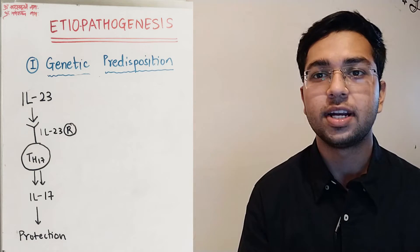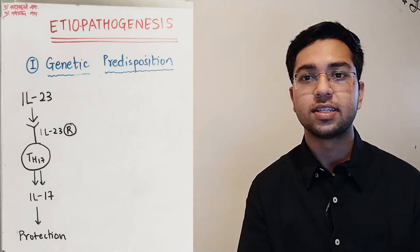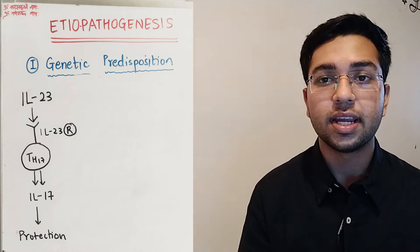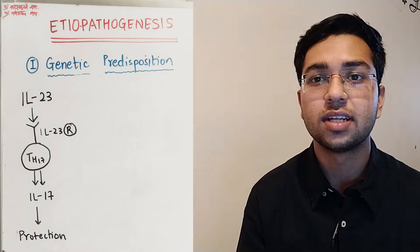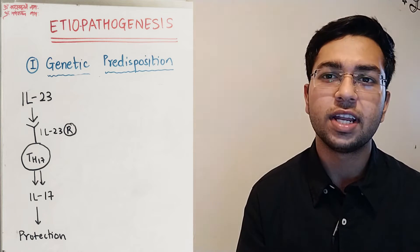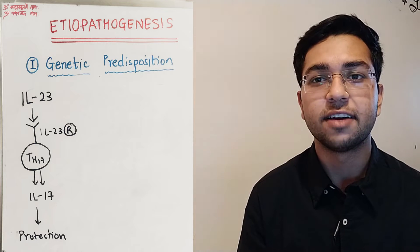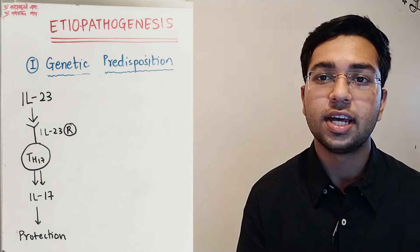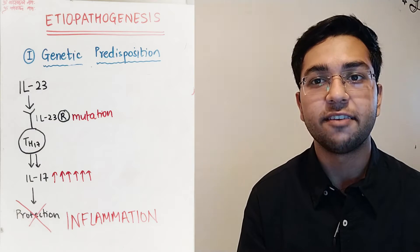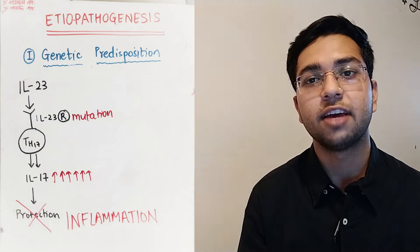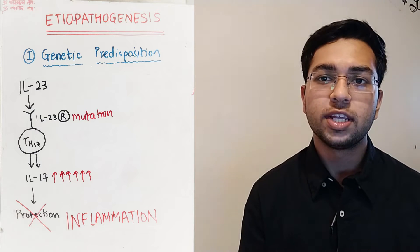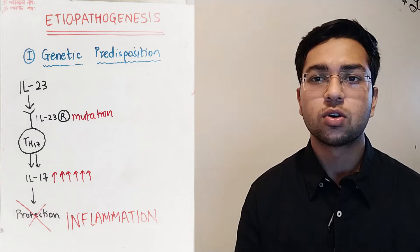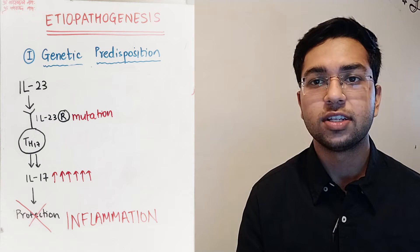The interleukin-23 receptor is present on helper T cells. Interleukin-23 acts on the interleukin-23 receptor present on helper T cells — more specifically, the TH17 subtype. This cell then releases interleukin-17 and TNF-alpha, tumor necrosis factor alpha. These two things play a major role in the pathogenesis of inflammatory bowel disease.